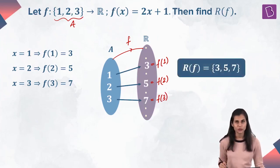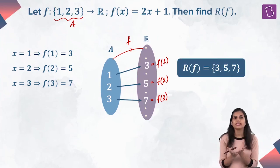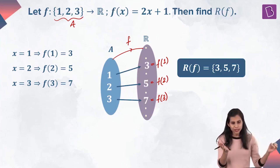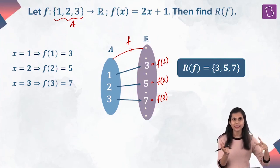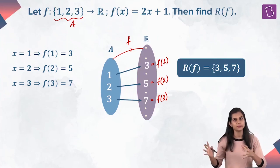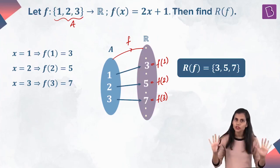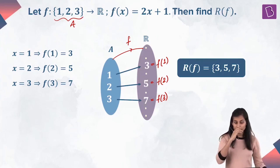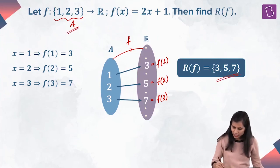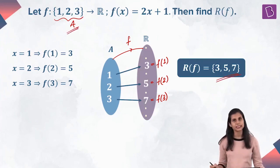What did you understand from this question? That f is actually a function working as a machine. So when you are inputting 1, 2, and 3 inside the machine, the outputs you are getting are 3, 5, and 7. So corresponding to the domain which is set A, the range is coming out to be this.